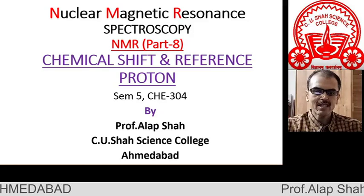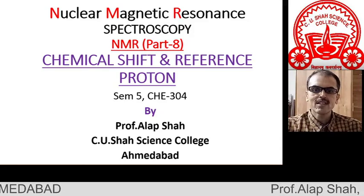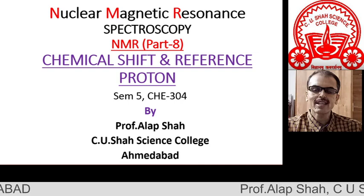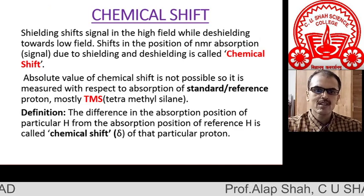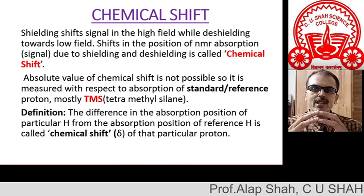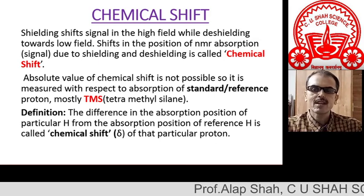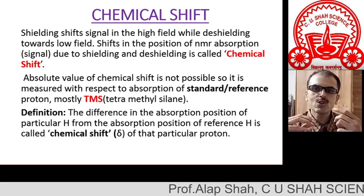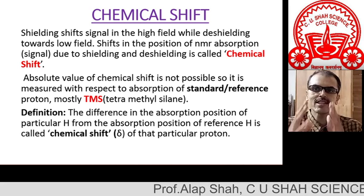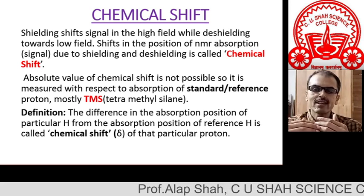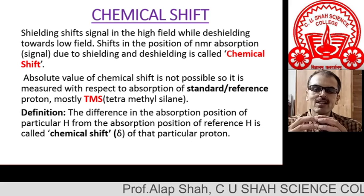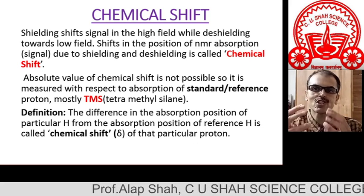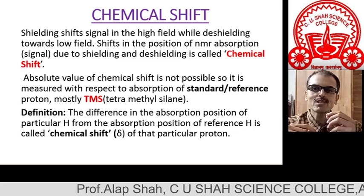Hello everyone. In this 8th presentation, we would discuss two very important points in NMR spectroscopy: chemical shift and reference proton. We know that shielding shifts absorption towards the high field and deshielding shifts towards the low field. The shift in the position of the signal due to shielding and deshielding is actually known as chemical shift. Now, the absolute value or absolute position of the signal is impossible to determine.